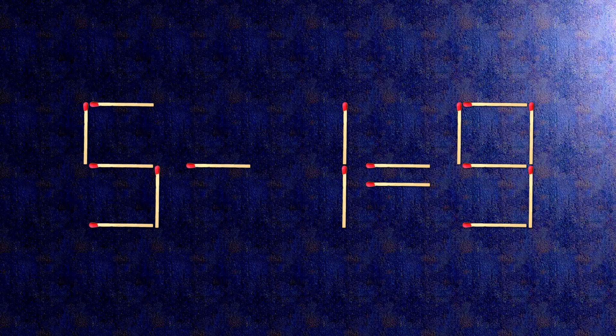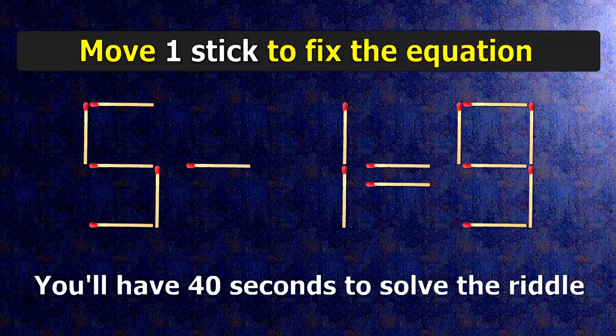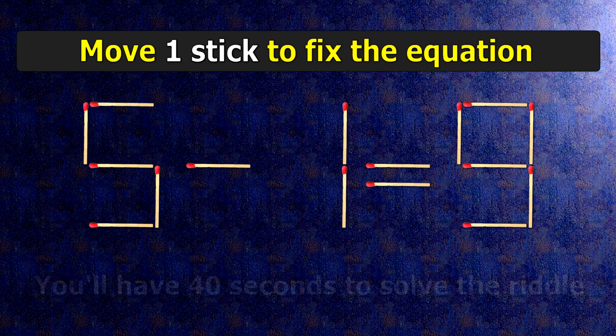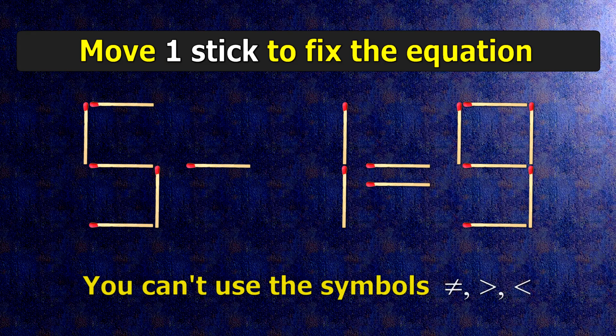We have the equality 5 minus 1 equals 9. Our equality is wrong. We need to move two matches to make our equality correct.